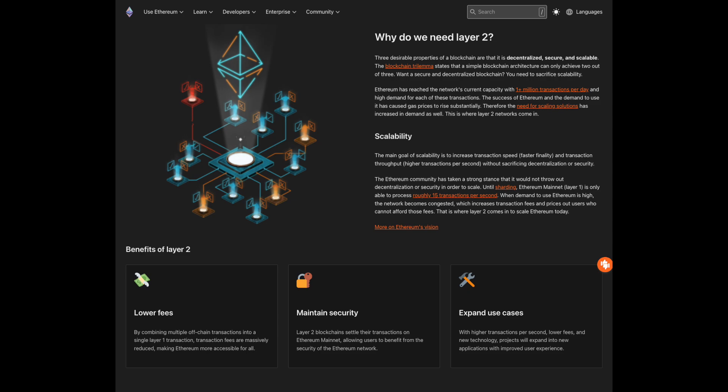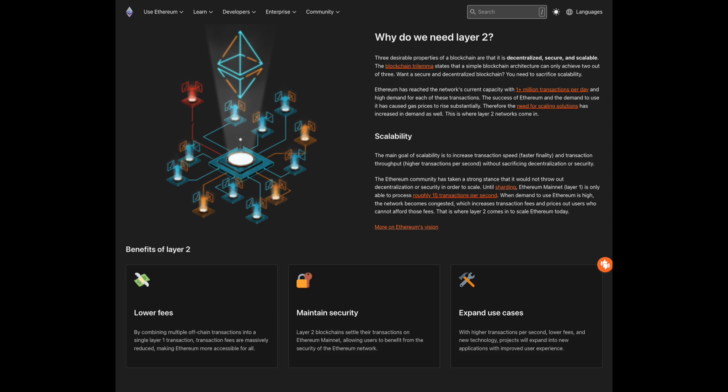The original plan was to do sharding on the entire blockchain, including the EVM, accounts, smart contracts, and data. Now they decided to only shard the data. Therefore, rollups will be able to increase scale. Vitalik and others believe this is the best route, as more and more computation will start to get done off the main chain.